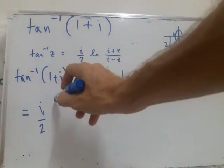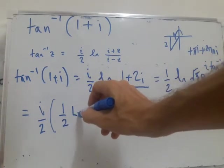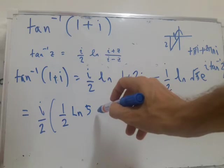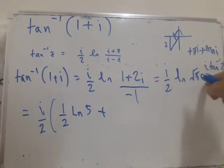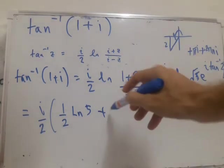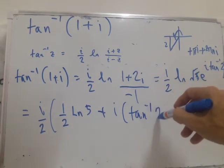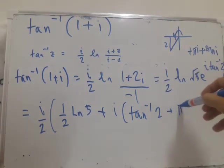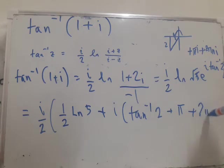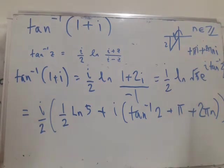So log of √5 is half of log 5. Then I'm going to bring all of this down to make it clear. So taking logs of e to the i something, what do I get? I get i times inverse tan of 2 plus my π plus 2πn. Always say what your n means, so it's just any integer.